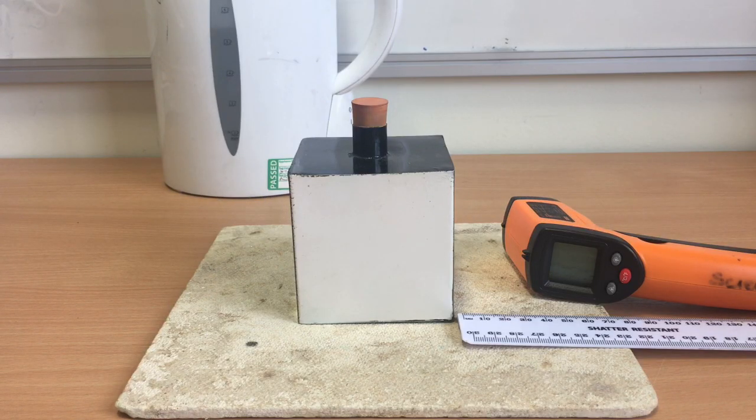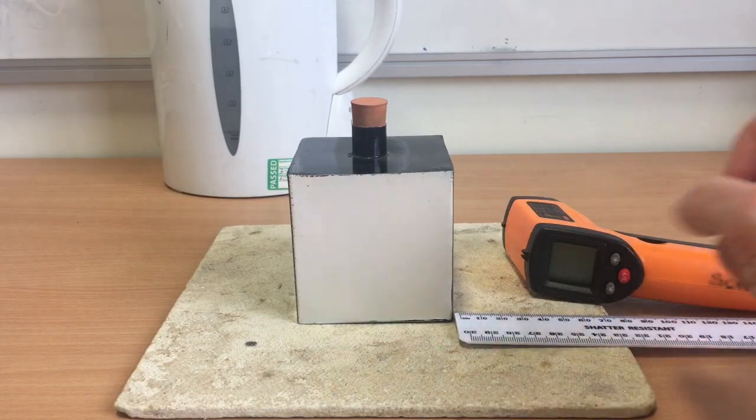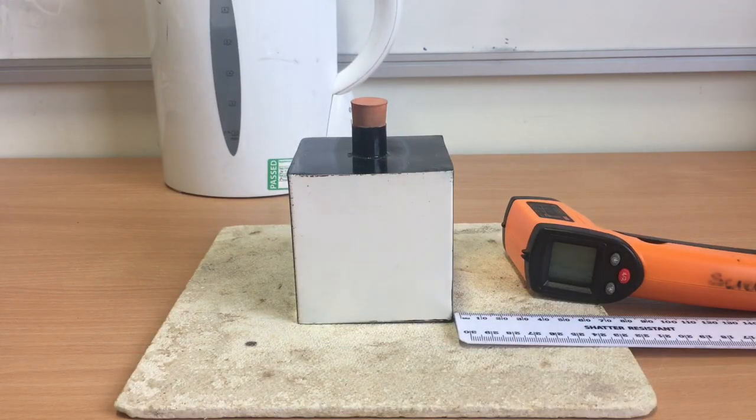You see in the background we've got a kettle, we've got a heatproof mat, we've got a ruler, an infrared detector, and this bit of kit in the centre is called a Leslie Cube.